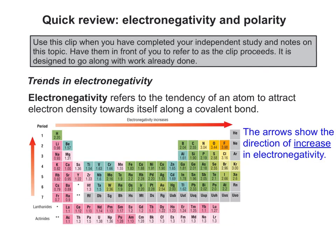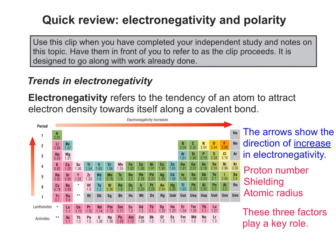If we look at the way electronegativity changes across the periodic table, the arrows show the direction of increase in electronegativity. We've already mentioned the factors and the importance they have in influencing electronegativity.